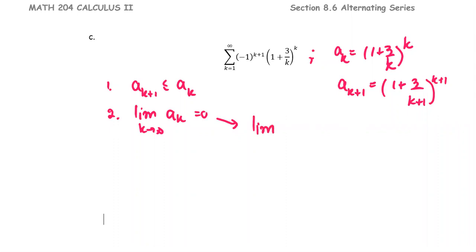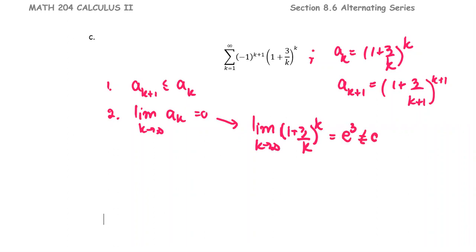The limit of 1 plus 3 over k, raised to the power k, as k approaches infinity, equals e to the third power — not equal to 0. That tells us the second condition is not met, and so the alternating series test does not apply for this series.